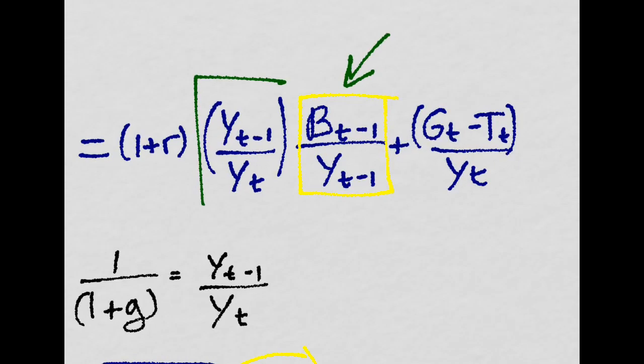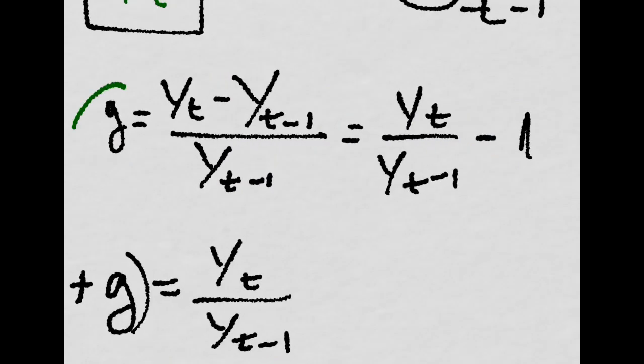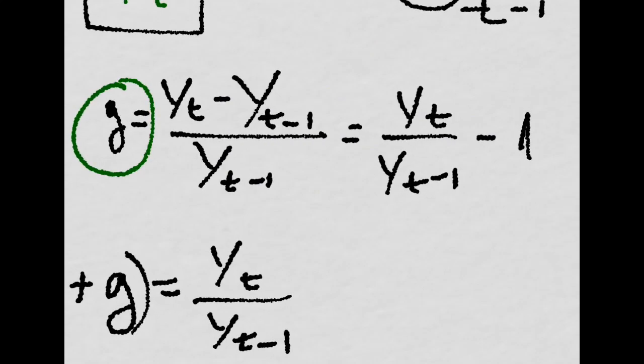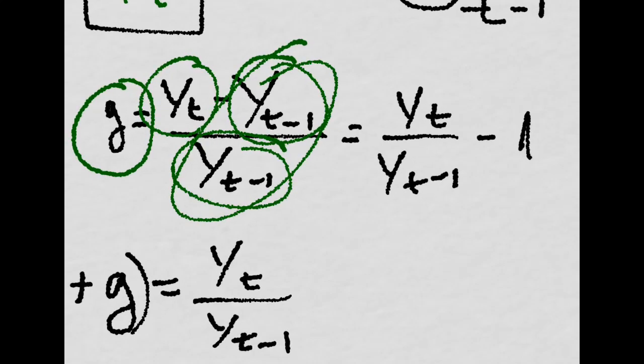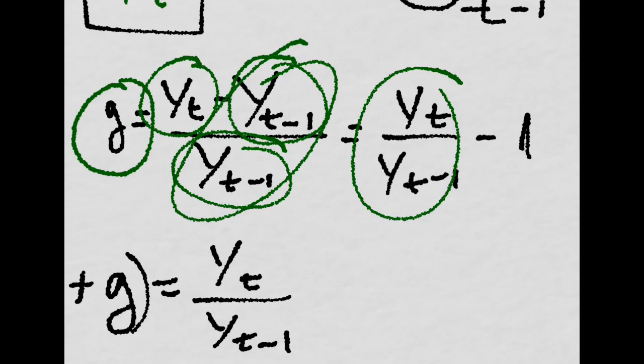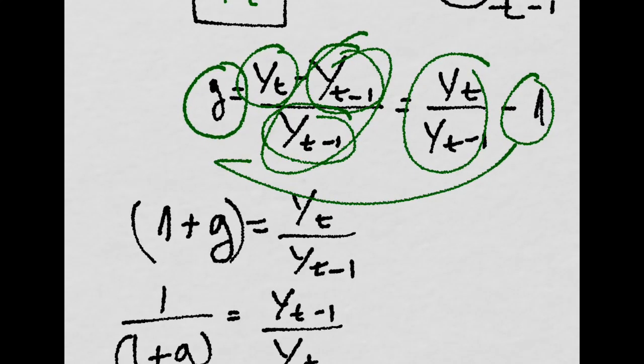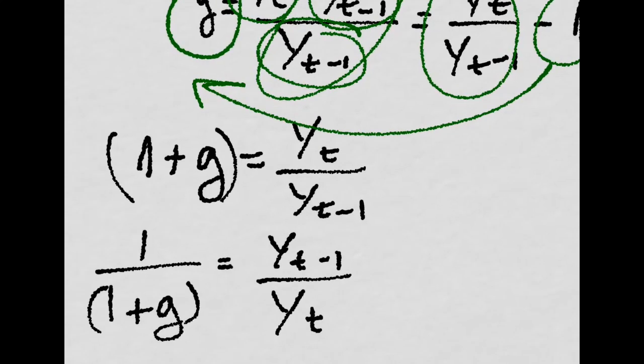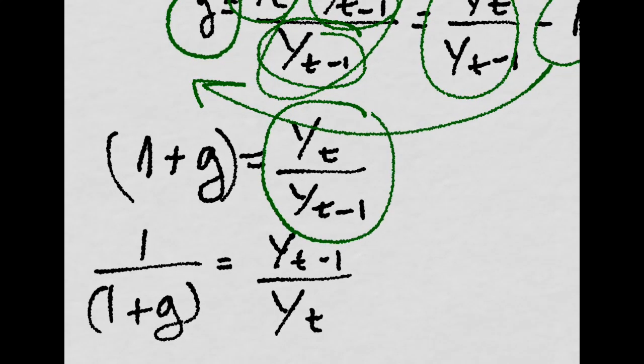So let's concentrate on this factor here. If we define the growth rate of GDP as YT minus YT minus 1 over YT minus 1, then this will be equal to 1, and this will be equal to this minus 1. If we pass the 1 all the way over there, then we have 1 plus G, the growth rate, is equal to YT over YT minus 1.